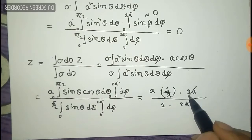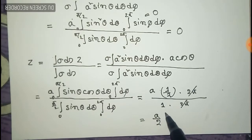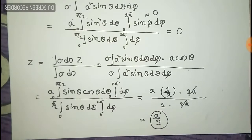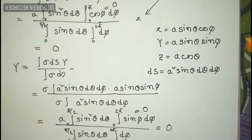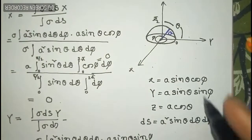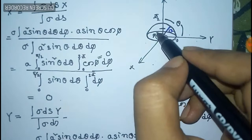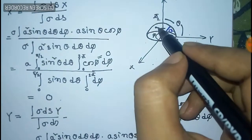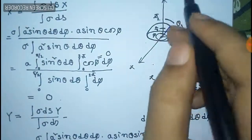The 2π cancels, so the result is a/2. Therefore, the center of mass of the hemispherical bowl is situated on the z-axis at a distance of a/2 from the origin — that is, half of the radius along the z-axis.